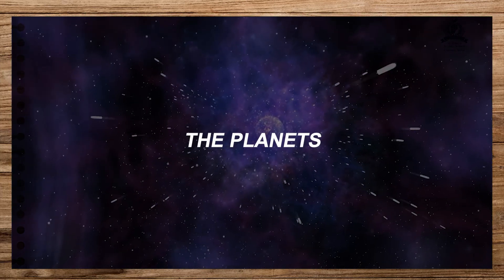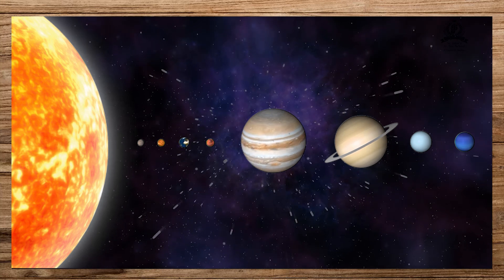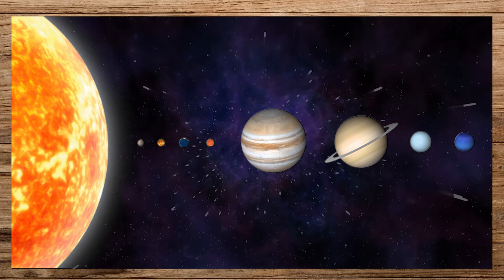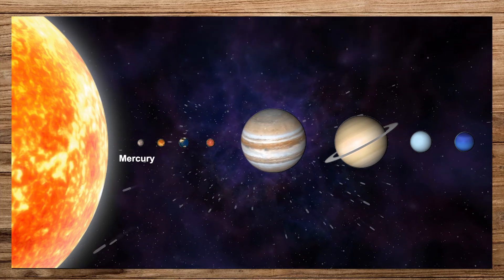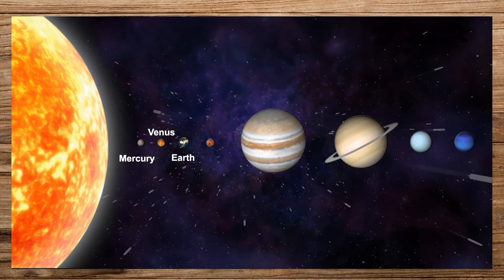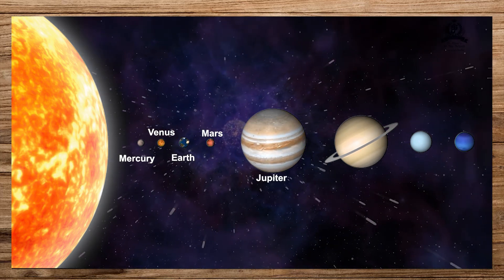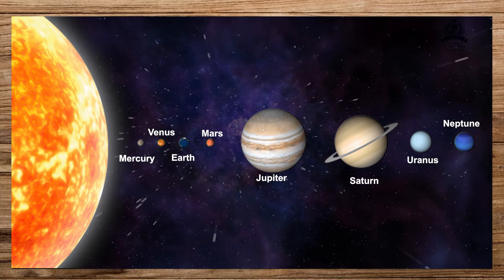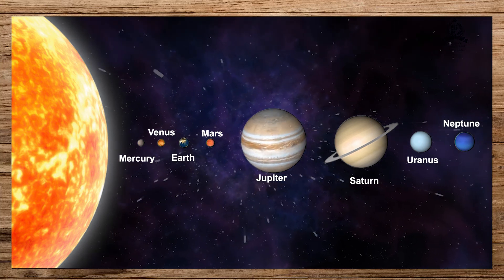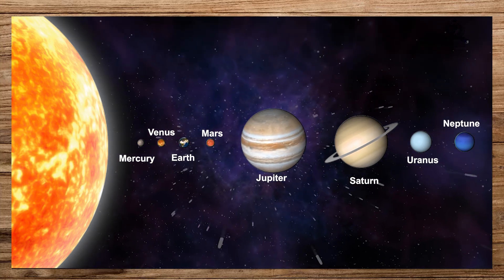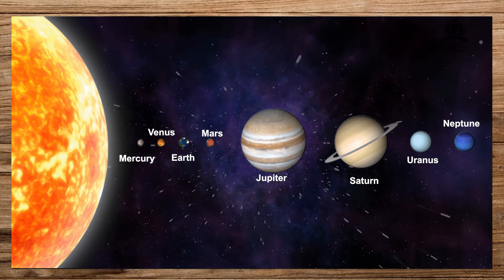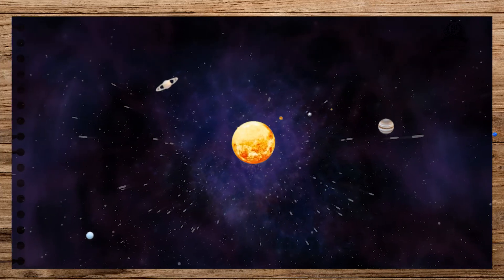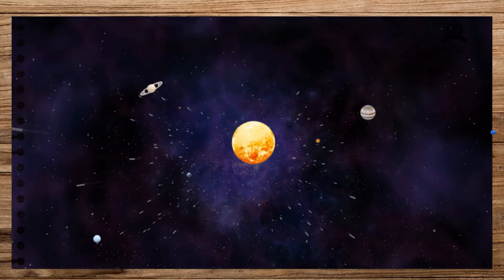There are eight planets in the solar system. In order of their distance from the Sun they are: Mercury, Venus, Earth, Mars, Jupiter, Saturn, Uranus, and Neptune. The planets are heavenly bodies — they do not have their own heat and light. All the planets are spherical in shape and they move around the Sun from west to east.